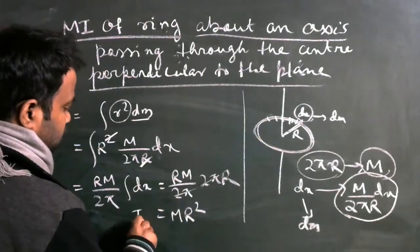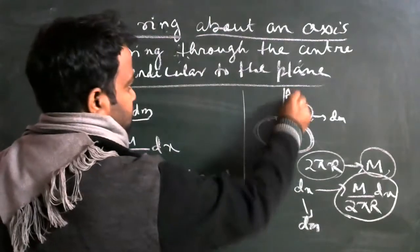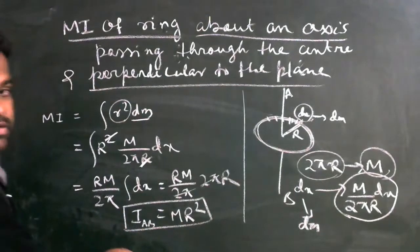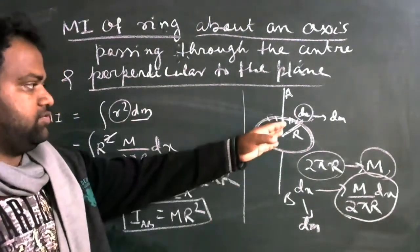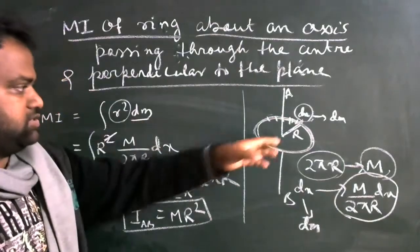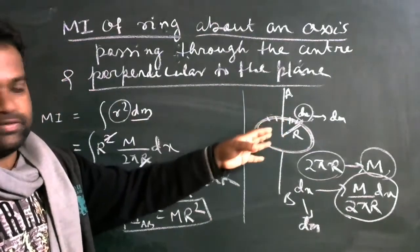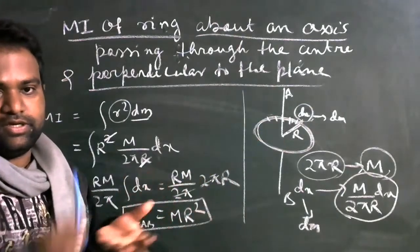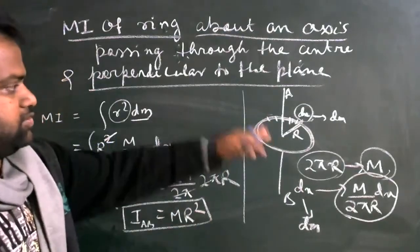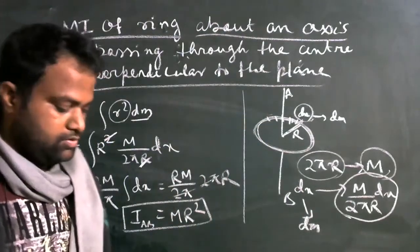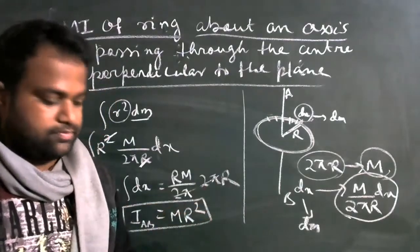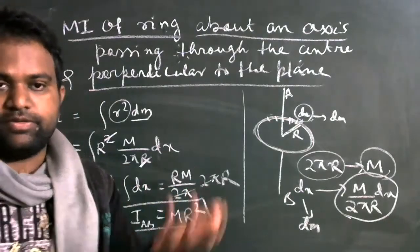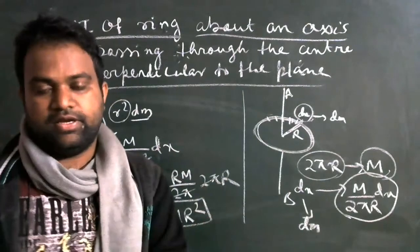So this is your moment of inertia about an axis AB, which is passing through the center of the ring and perpendicular to the surface of the ring. The ring is rotating like this — perpendicular to the plane. The result is I = MR².